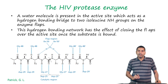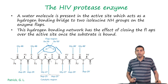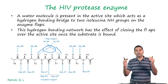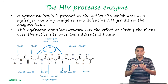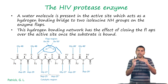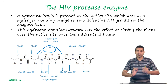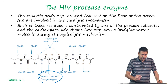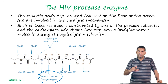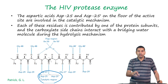An interesting feature of this protease is that there is a water molecule present in the active site which acts as a hydrogen bond bridge. This bridge connects two isoleucine NH groups on the enzyme flaps, and the hydrogen bonding network has the effect of closing the flaps over the active site once the substrate is bound — the flaps are open and after substrate binding they close. The aspartic acid residues ASP25 and ASP25' on the floor of the active site are involved in the catalytic mechanism, with their carboxylate side chains interacting with the bridging water molecule during hydrolysis.